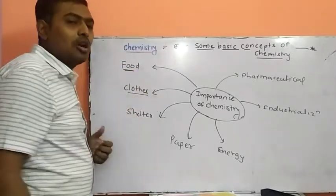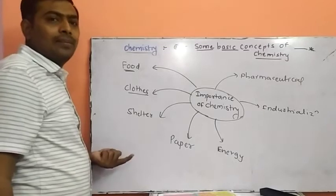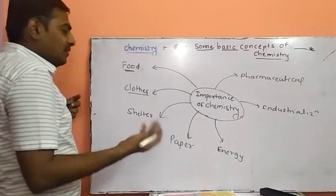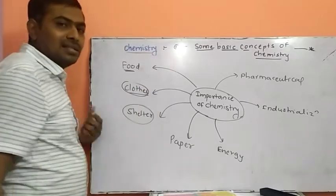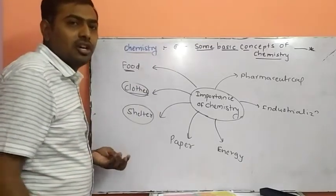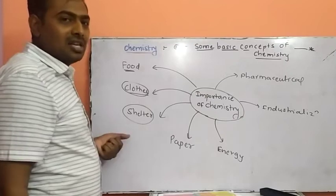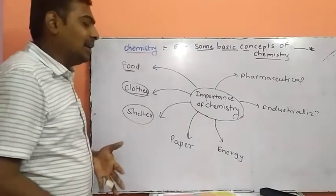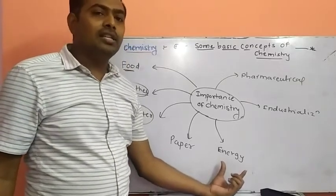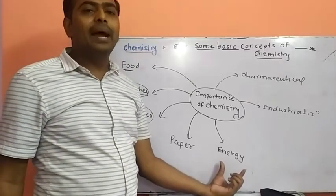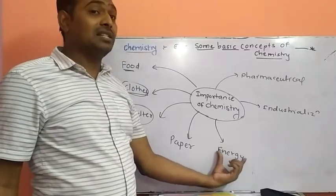Different types of cloths like nylon, rayon, elastomer are cloths which require chemical processes. Shelter: cement is the important constituent of construction which is made with the help of chemical industries. Then, for energy creation like atomic energy, nuclear energy or the energy generated by different batteries which require chemical reactions.